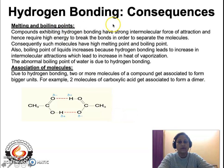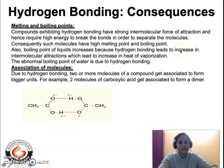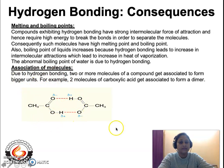The consequences of hydrogen bonding are as follows. Molecules which have intermolecular hydrogen bonding exhibit high melting and boiling points, due to the strong intermolecular force of attraction binding two molecules together. Additionally, acetic acid molecules associate with each other via intermolecular hydrogen bonding to form a dimer — this is the second consequence, molecular association.